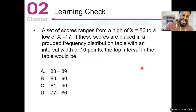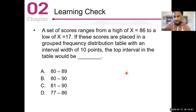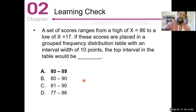It says a set of scores ranges from a high of x equals 86 to a low of x equals 17. If these scores are placed in a grouped frequency distribution table with an interval width of 10 points, the top interval in the table would be blank. With an interval of 10, you go 10 to 19, 20 to 29, 30 to 39, 40 to 49, 50 to 59, 60 to 69, 70 to 79, 80 to 89. The top interval, which contains the highest score, should be 80 to 89.